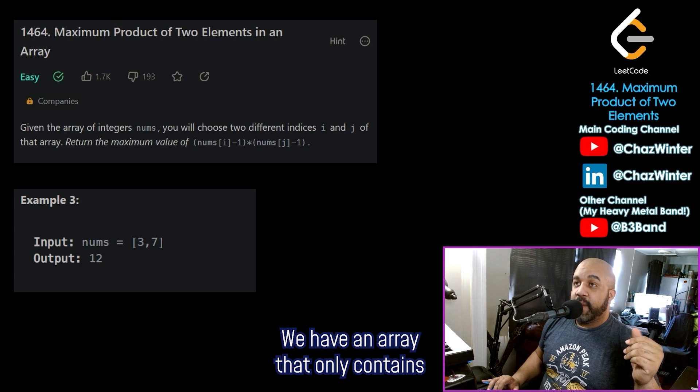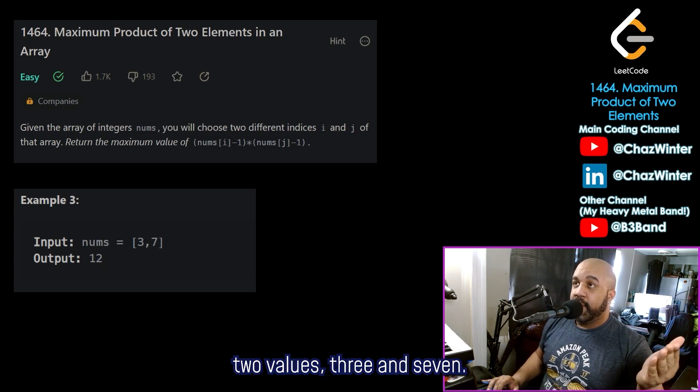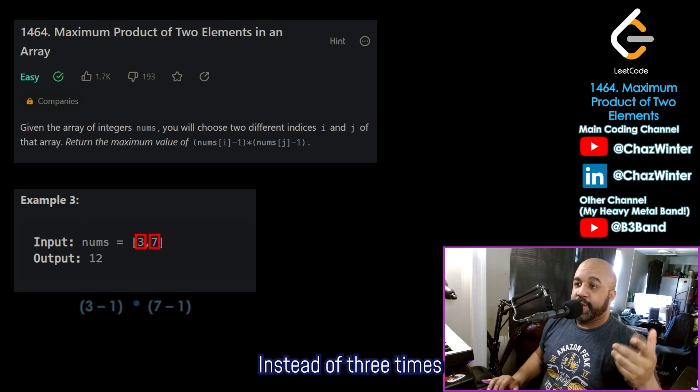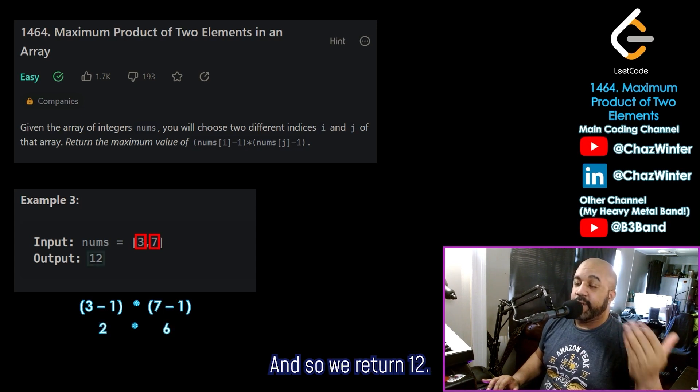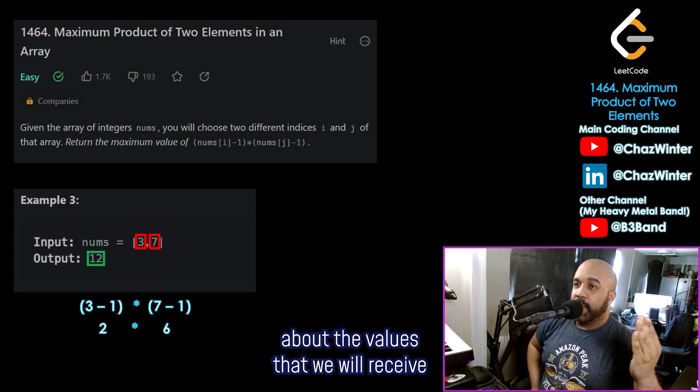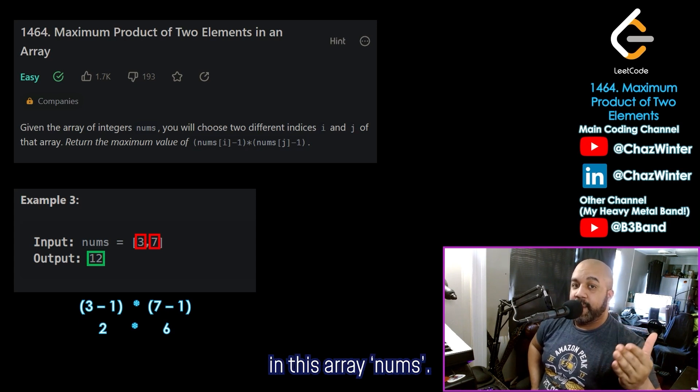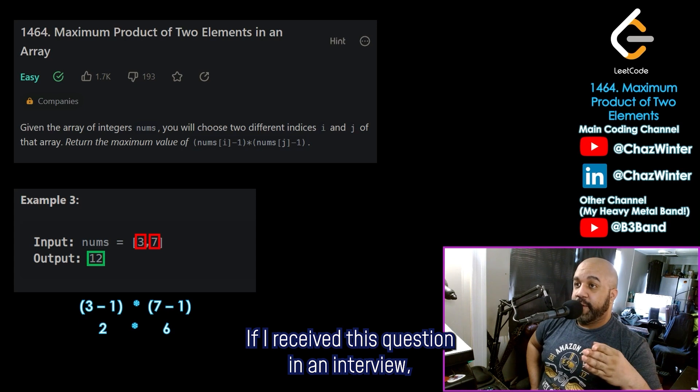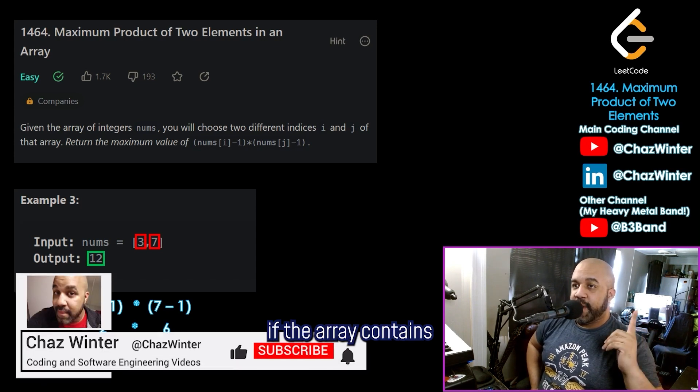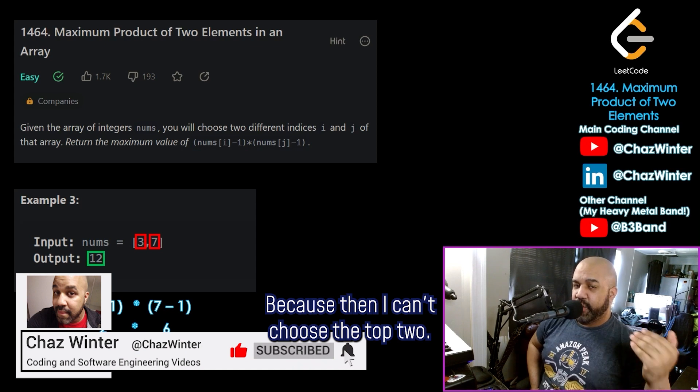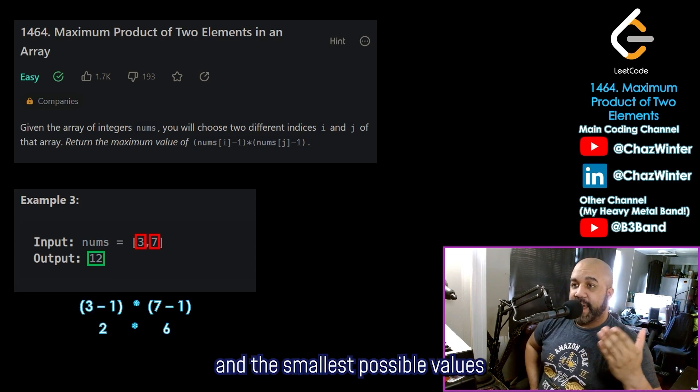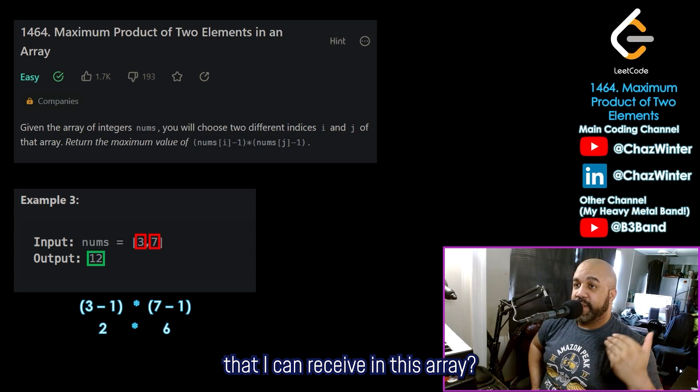And then finally here, example three, we have an array that only contains two values, three and seven. So we must choose the three and the seven. We subtract one from each of them before multiplying. So instead of three times seven, we should do two times six. And so we return 12. Now looking at this array here in example three, I now have some questions about the values that we will receive in this array nums. If I received this question in an interview, and especially if I saw this example, the very next question I'm going to have is, what should I do if the array contains fewer than two values?